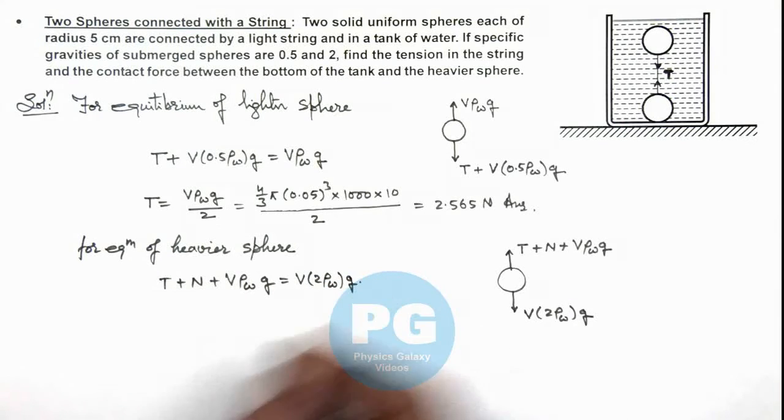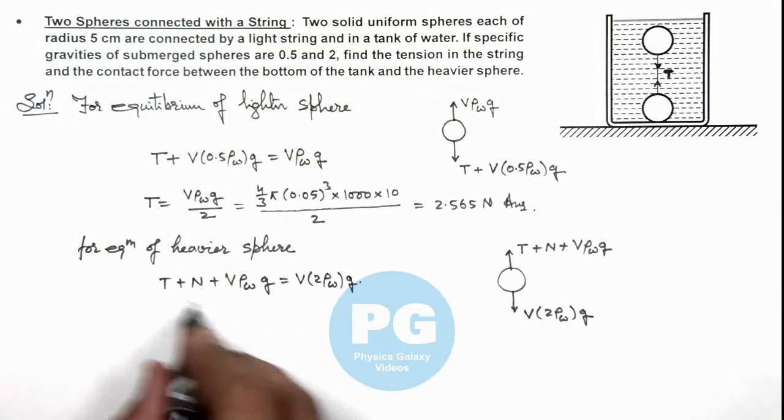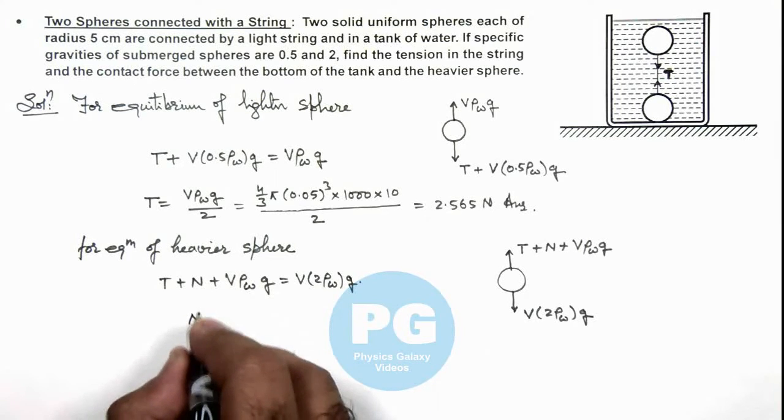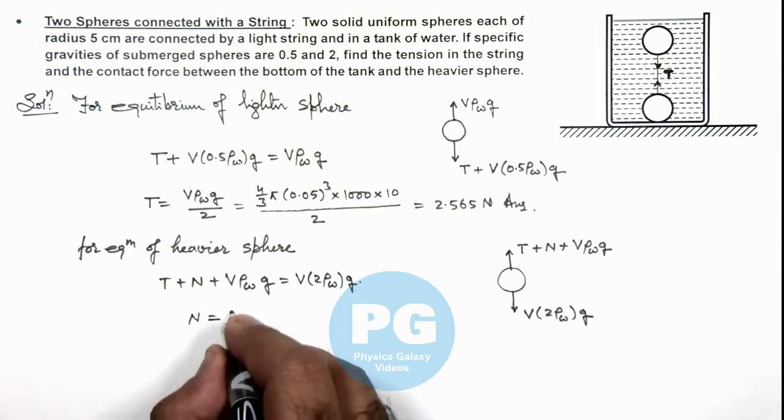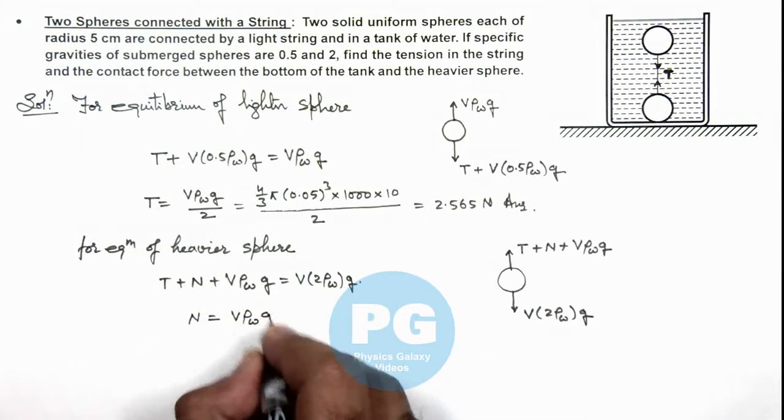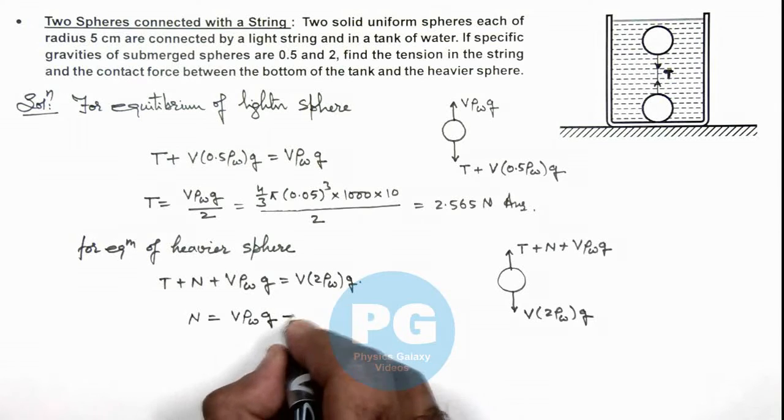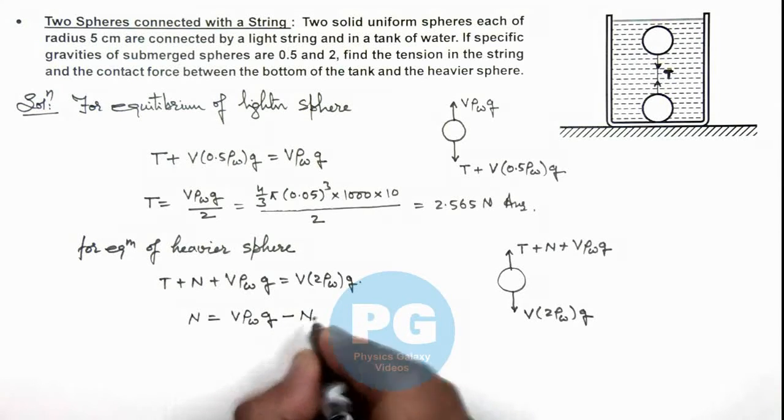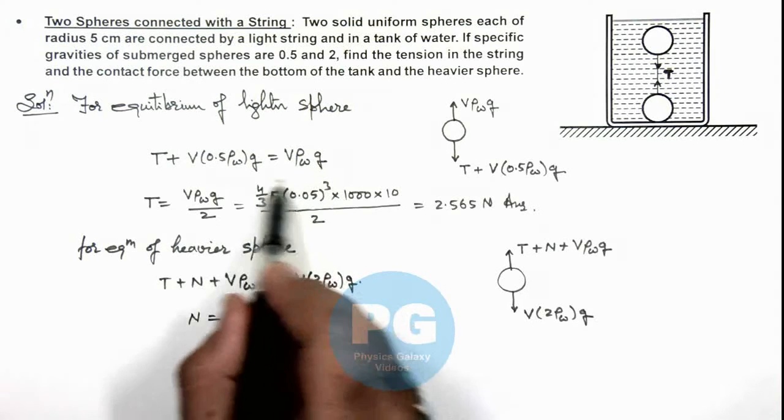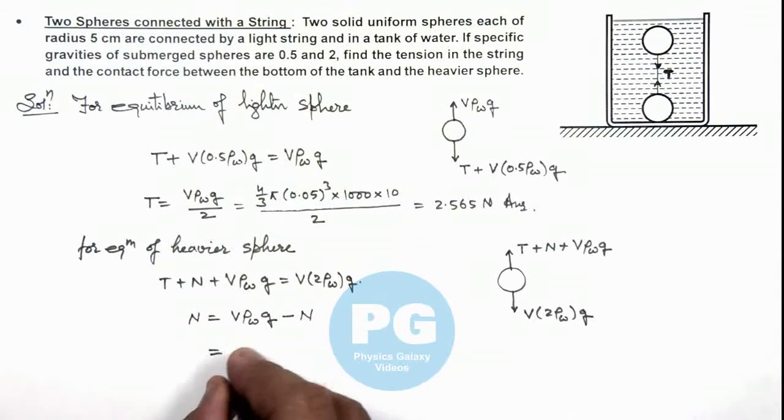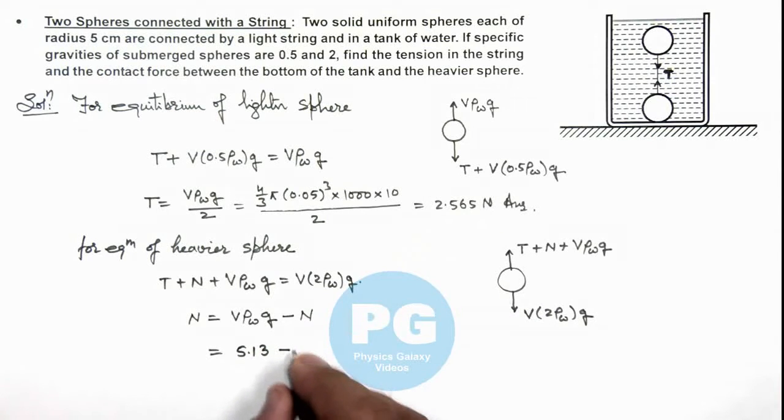So in this situation, the value of normal reaction here will get the value of this will be equal to V ρ water g minus the normal reaction. So if you calculate the value of V ρ water g this we have calculated over here. This is 5.13 newton minus the normal reaction is 2.565 newton and numerically, the tension.